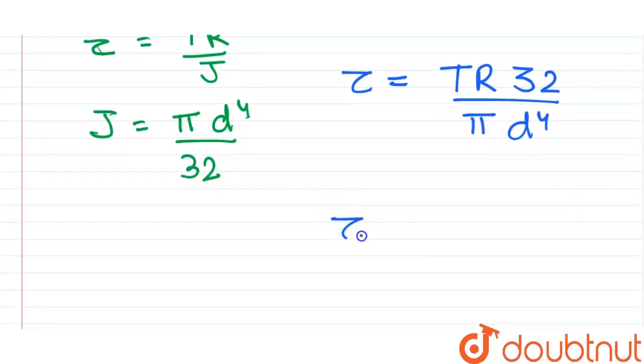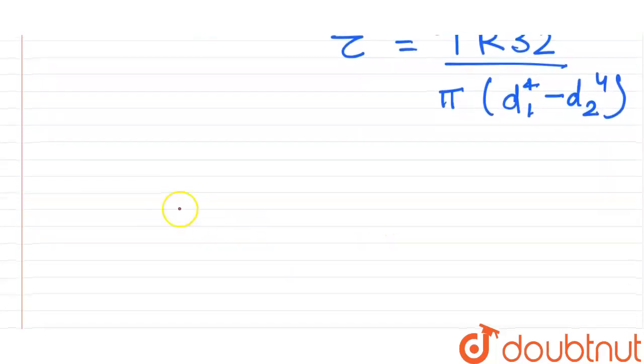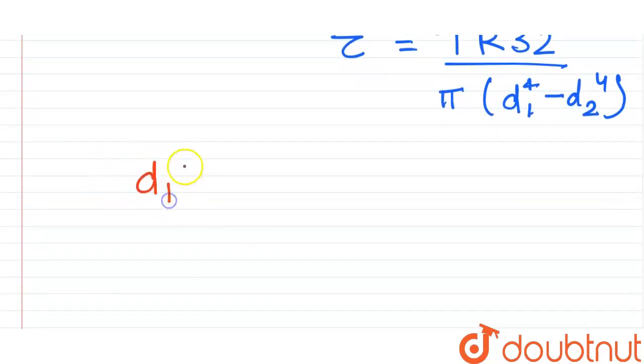And for a hollow shaft, it will become torque is equal to TR 32 upon π times d1 raised to the power 4 minus d2 raised to the power 4.